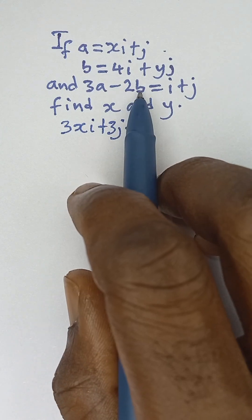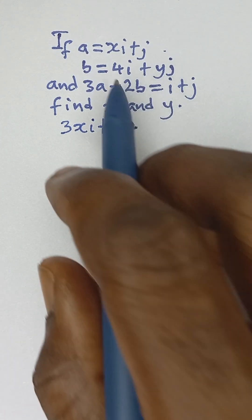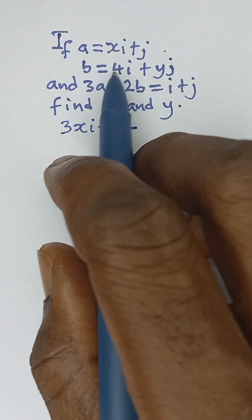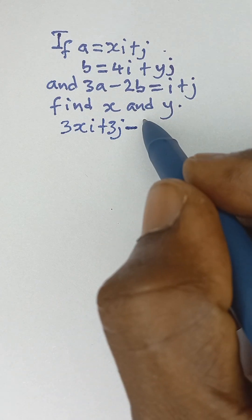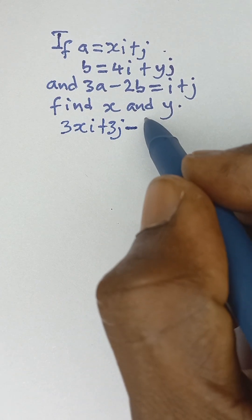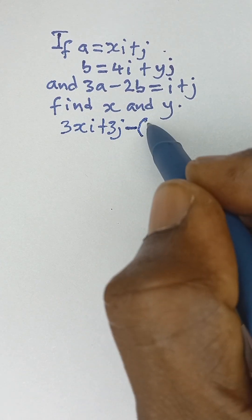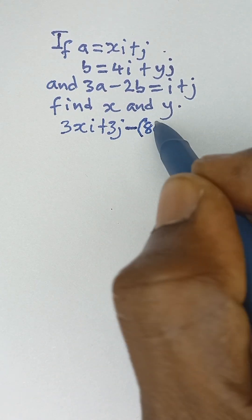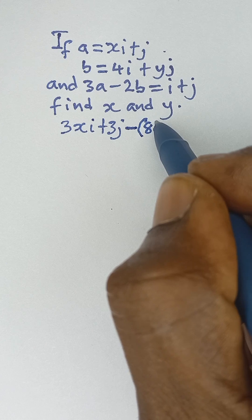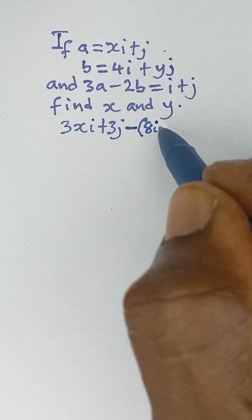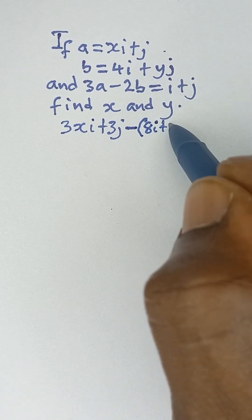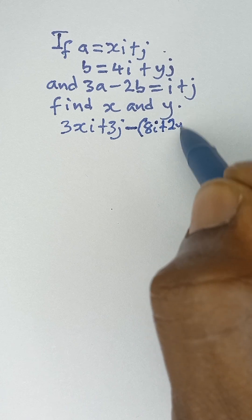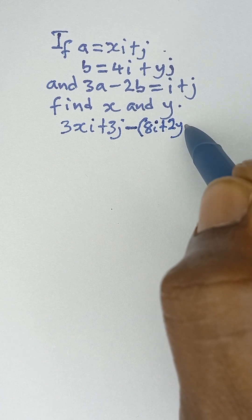Then minus 2b — 2b means to multiply by this vector and also multiply by that — will give us minus 8i plus 2YJ.